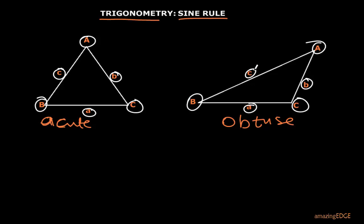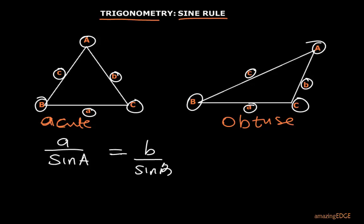Now we want to develop the formula for the sine rule. The sine rule states: a over sine A equals b over sine B, and this equals c over sine C.